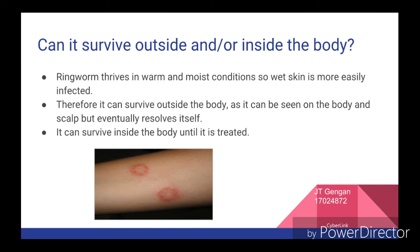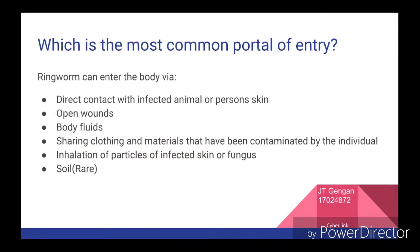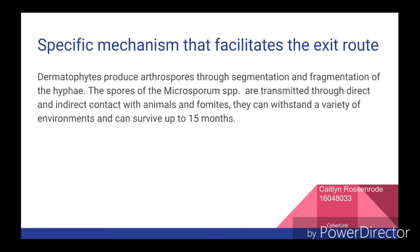It can be seen on the body and scalp but eventually resolves itself. It can survive inside the body until it is treated. Ringworm can enter the body via direct contact with infected animal or person's skin, opened wounds where broken skin from an infected area enters the wound, bodily fluids, sharing clothing and materials contaminated by the individual, or inhalation of particles of infected skin or fungus and soil, which is very rare. Dermatophytes can produce arthrospores through the segmentation and fragmentation of the hyphae. The spores of the Microsporum species are transmitted through direct and indirect contact with animals and fomites. These spores can withstand a variety of environments and can survive up to 15 months.